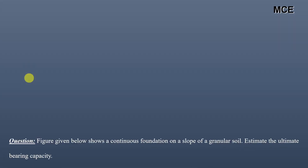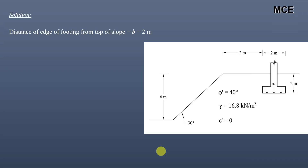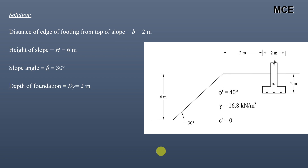Now we find the bearing capacity for a foundation built on cohesionless (granular) soil. The question: a continuous foundation on a slope of granular soil has the following data — angle of internal friction φ' = 40°, height of slope H = 6 m, distance of edge of footing from top of slope (small b) = 2 m, width of footing B = 3 m, depth of footing = 2 m, effective cohesion c' = 0 (sandy soil), and unit weight γ = 16.8 kN/m³.